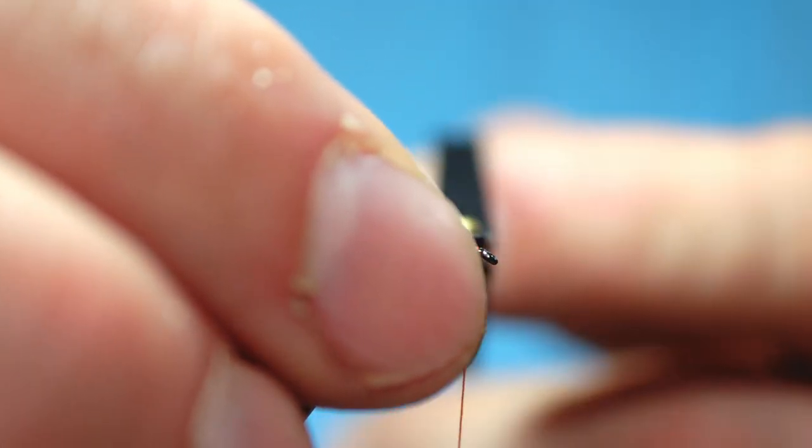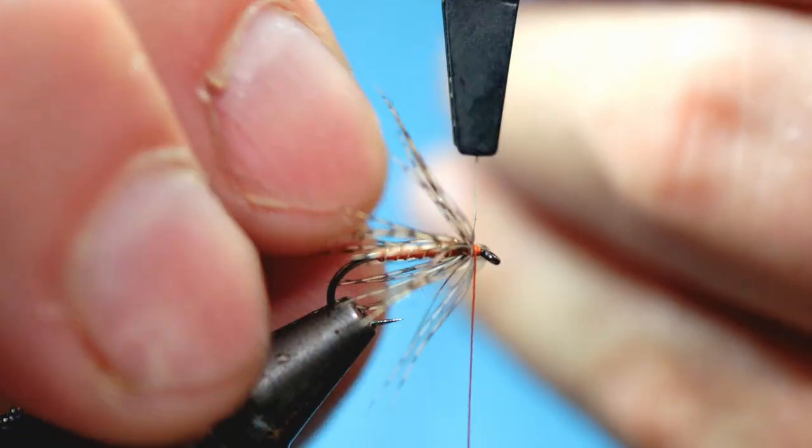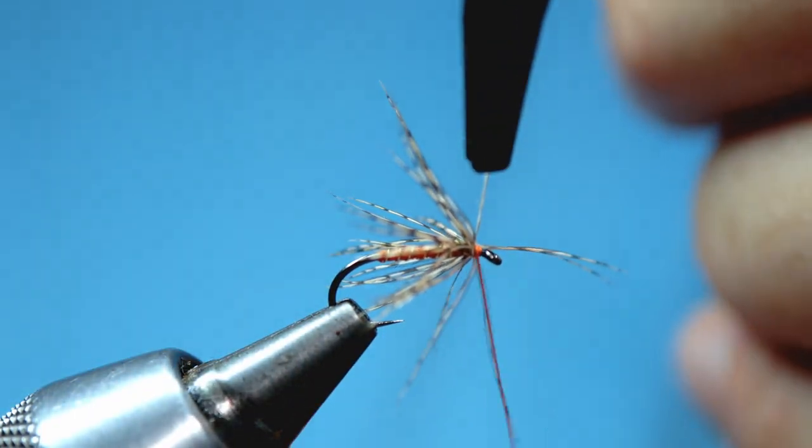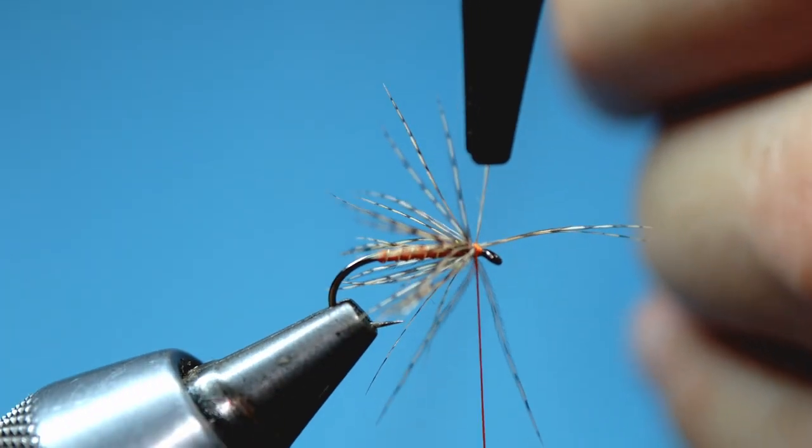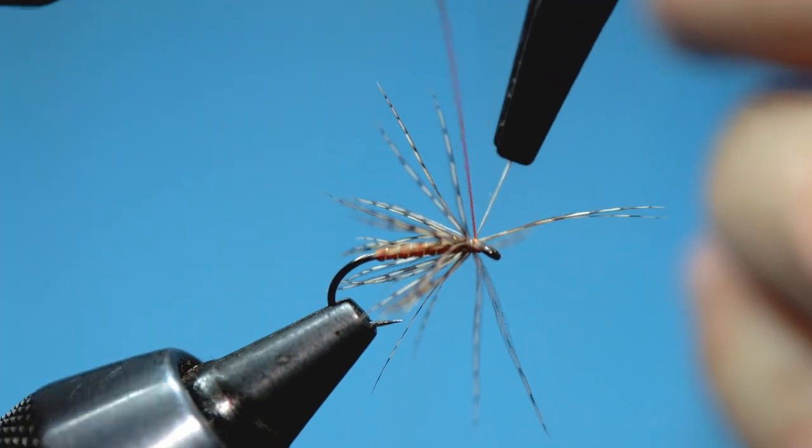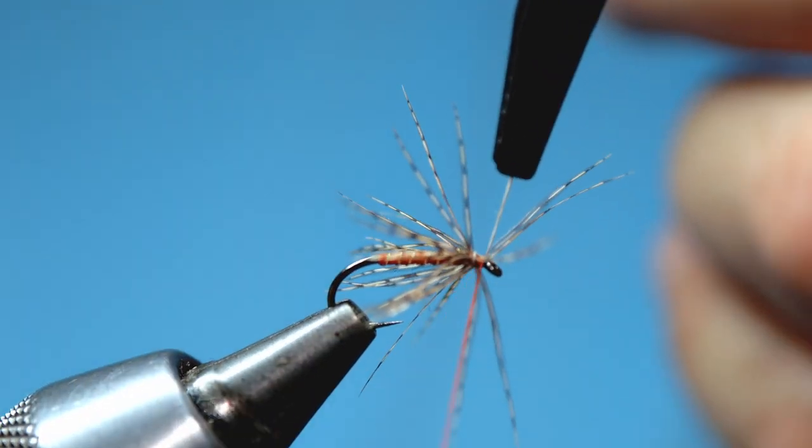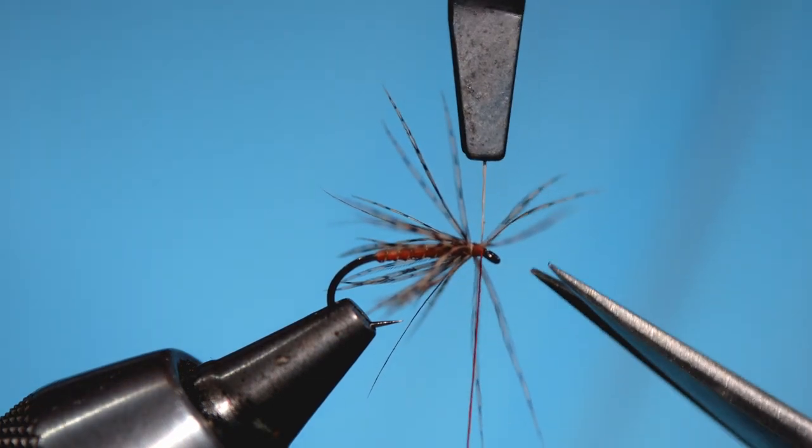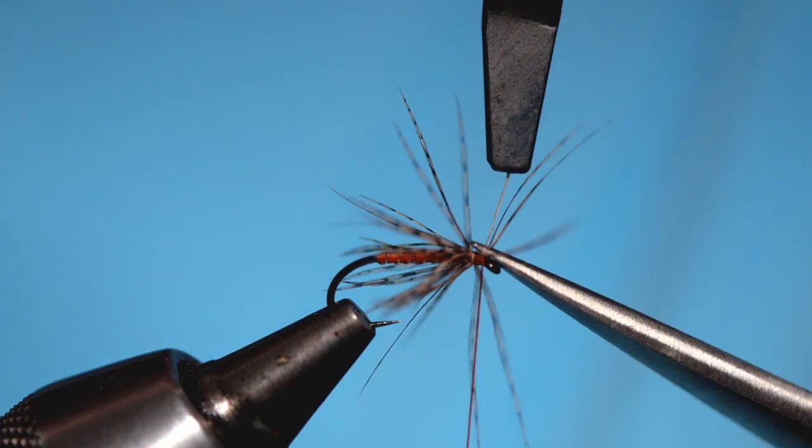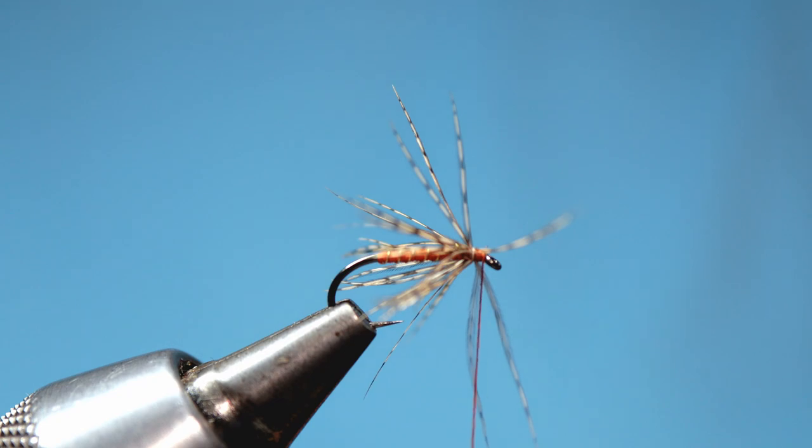Once you're happy with the hackle density trap down that hackle stalk with two nice tight turns of silk. Come in with your scissors and trim off that hackle stalk and if you want you can now start to tidy up those stray hackle fibers.